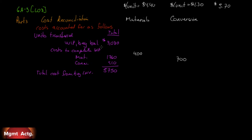Someone may be saying: I thought we were only concerned with costs incurred during the period. Yes — costs incurred during the period to figure out our cost per equivalent unit. But when we're transferring stuff out, we have to transfer the entire cost. If the stuff in inventory at the beginning of the month already had $3,080 in it and we're transferring it out of the work in process T-account, we have to transfer that $3,080 out. To calculate cost per equivalent unit, we're only concerned with costs incurred this month under FIFO.